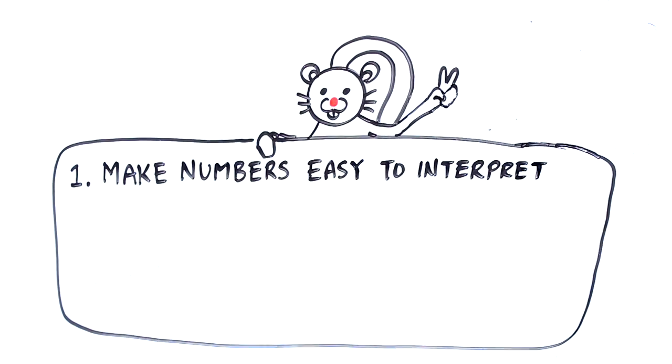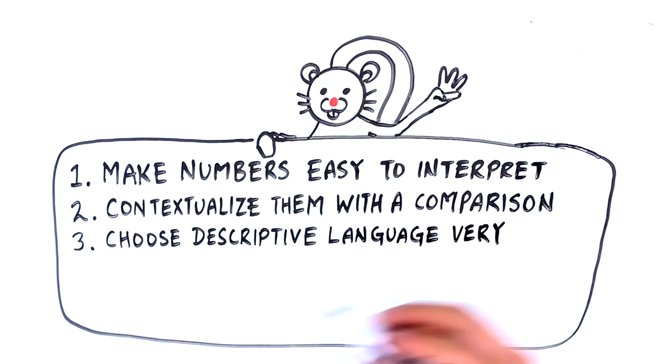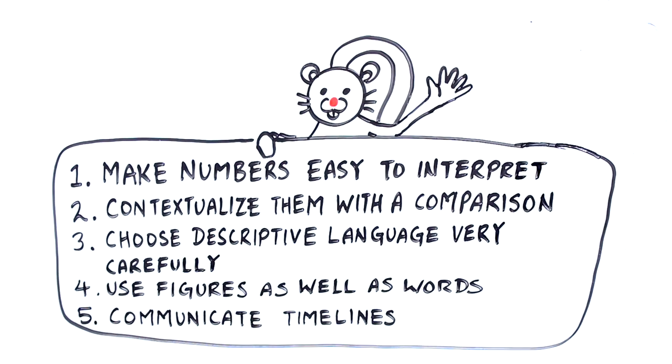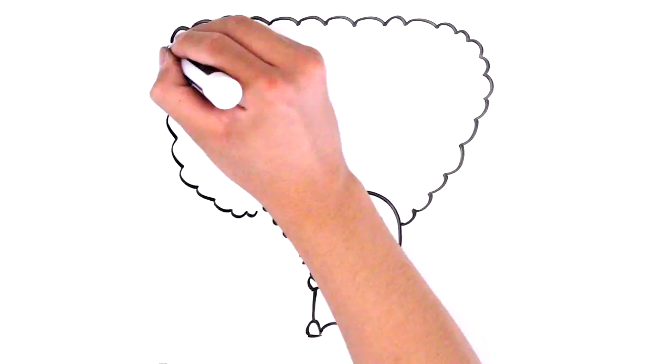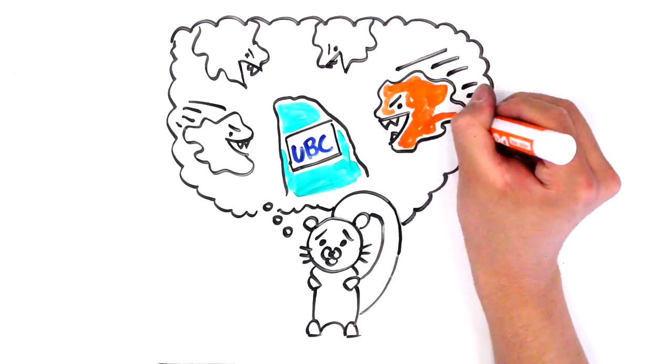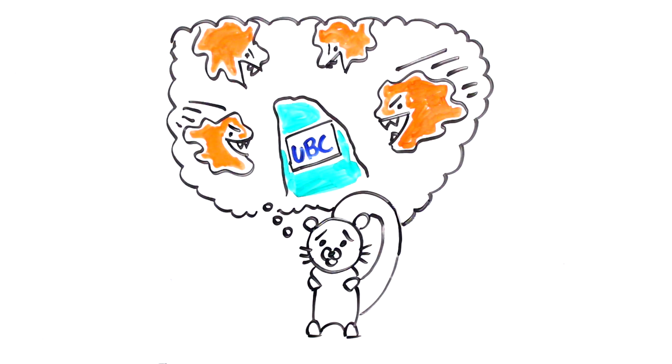As a quick recap, remember to follow Grammar Squirrel's five tips when communicating uncertainty. Because if you don't put these tips into practice, your audience might well leave with the wrong idea.